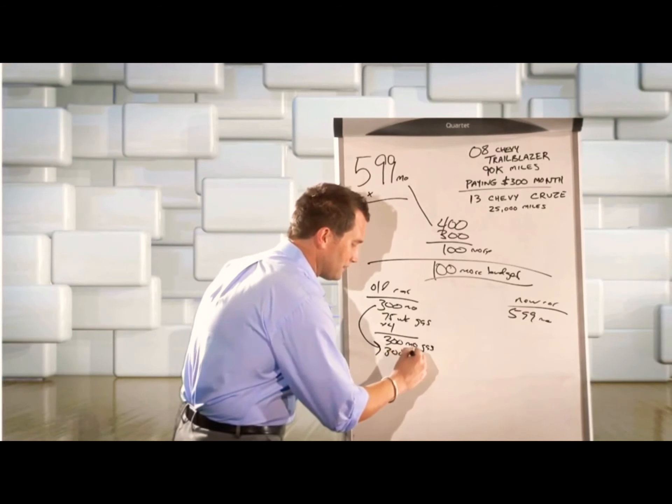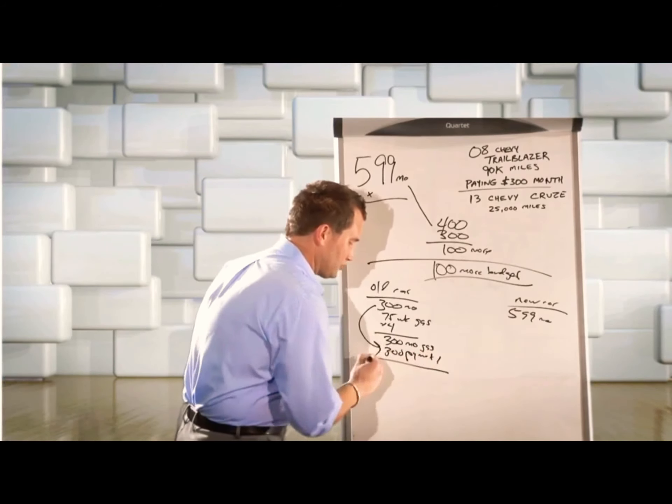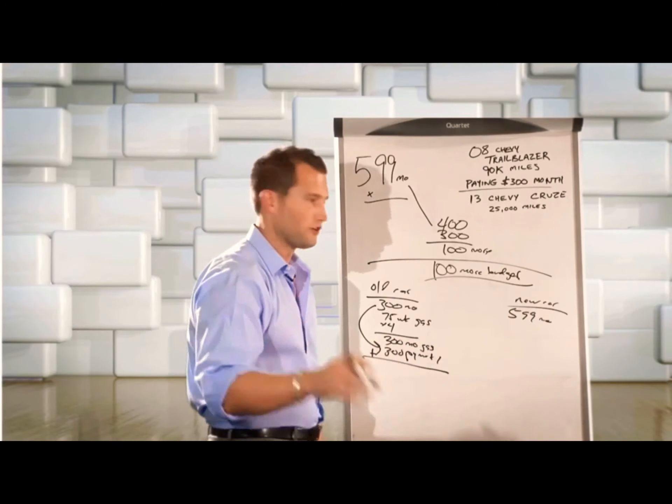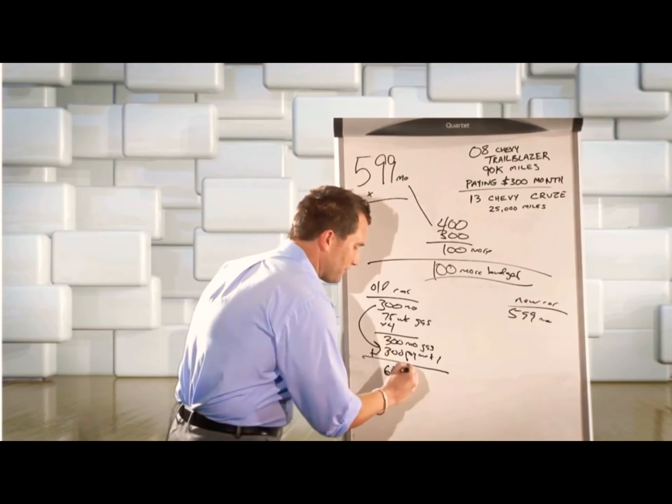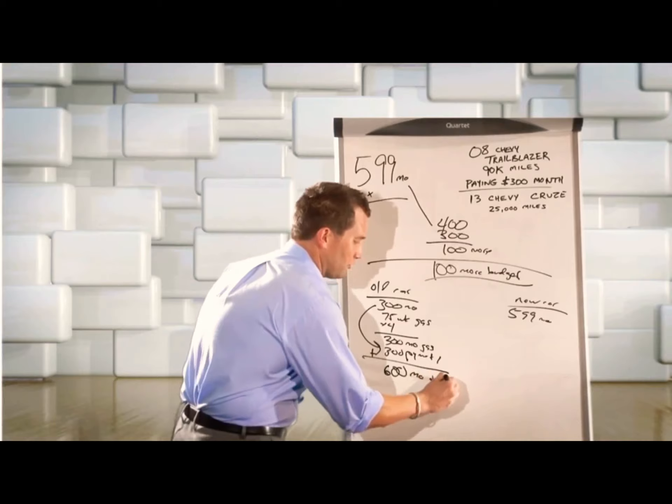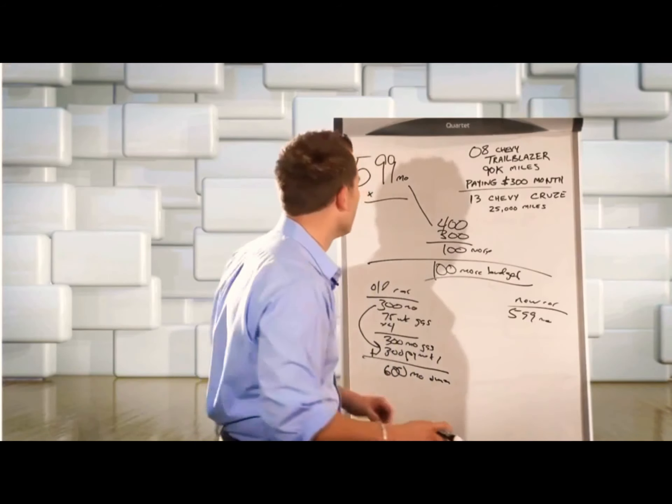Now, I'm also going to add in the $300 payment that you currently pay to the bank. And it shows me that if I add the $300 gas and the $300 payment, $600 a month is how much it's costing you to drive your old vehicle.